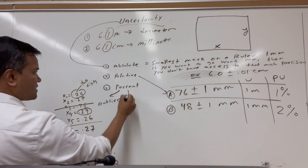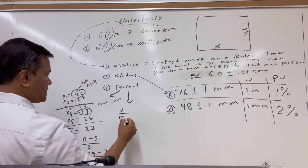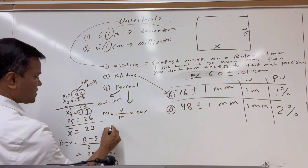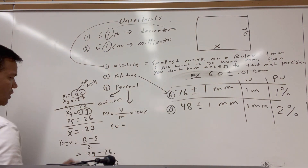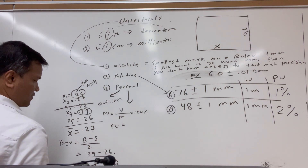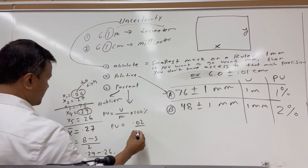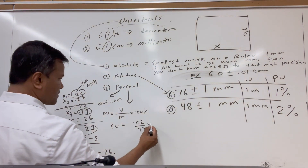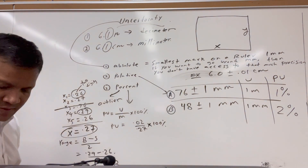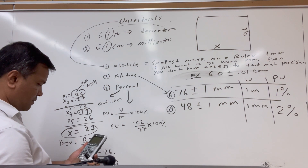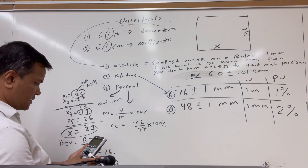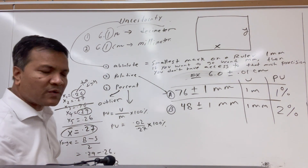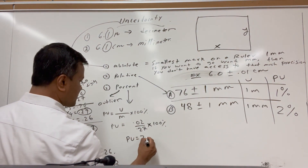Now we find percent uncertainty: uncertainty divided by measurement times 100%. The uncertainty is 0.02, and the measurement (class average) is 0.27. So 0.02 divided by 0.27 times 100% equals approximately 7.4%. So the percent uncertainty is 7.4%.